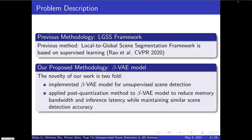This would in turn raise practical concerns like inference latency and memory usage. The previous methodology of solving scene detection-related problems is proposed by Rao, using a supervised learning approach. The novelty of our work is twofold: first, we propose using a Beta VAE model to perform scene detection tasks in an unsupervised way; second, we apply a post-quantization method to reduce memory bandwidth and inference latency while maintaining similar scene detection accuracy.